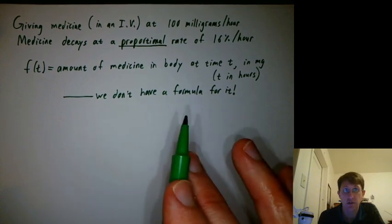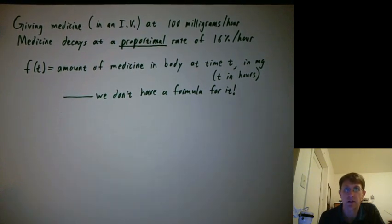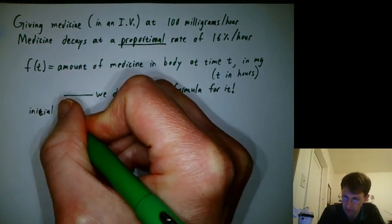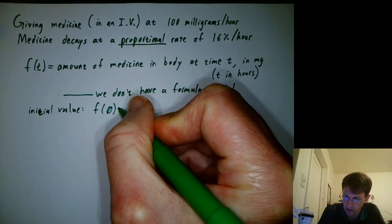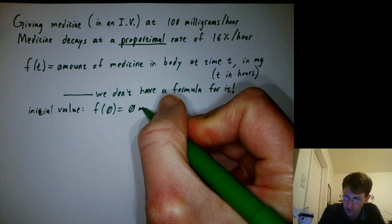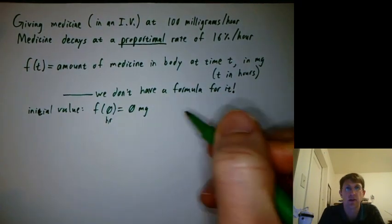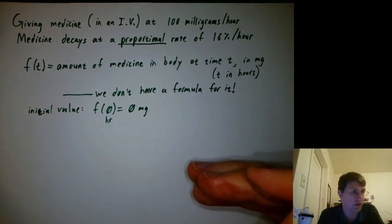We don't have a formula for f(t), and we don't have data for it. We're going to have to find out the values of f(t) as we go along. Let's say we do know the initial value that at time zero, there's zero milligrams in the body. That's kind of when we start the intravenous drip, and the person doesn't have any medicine in their body at that particular time.